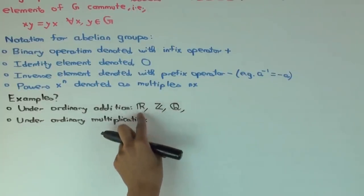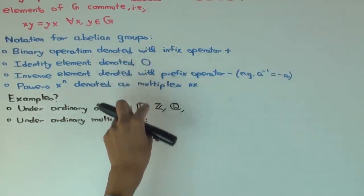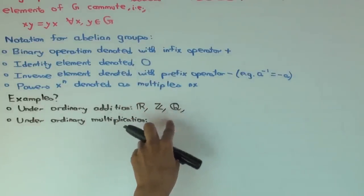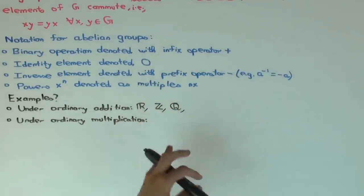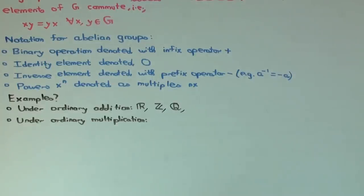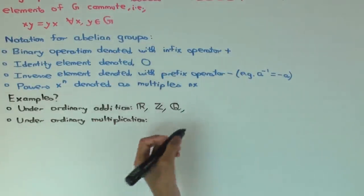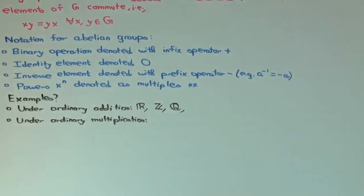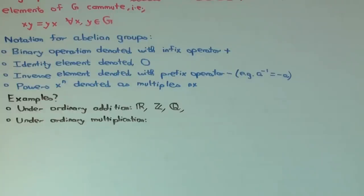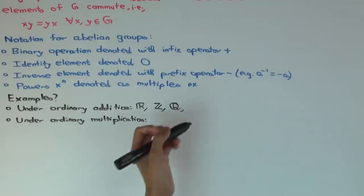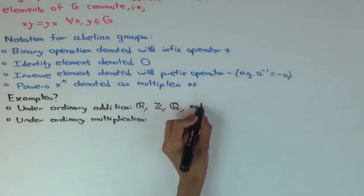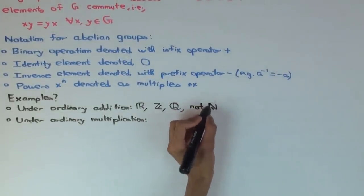For all of these, they are closed under addition. There's a, the, the zero, they have a zero, which is just the usual zero, and they are closed under subtraction, which is just the usual, I mean, they're closed under the negation operation, just the usual taking the minus of something. What about the natural numbers? Do they form a group under ordinary addition? No. Why? I don't have a zero element, and they don't have negatives, right? They're not, the natural numbers.